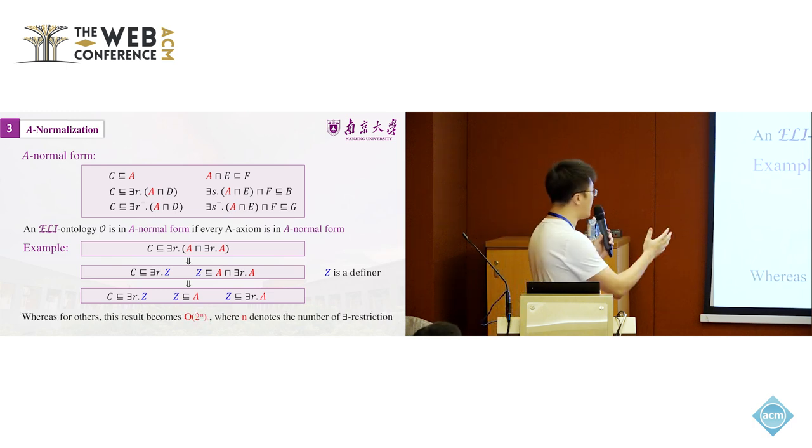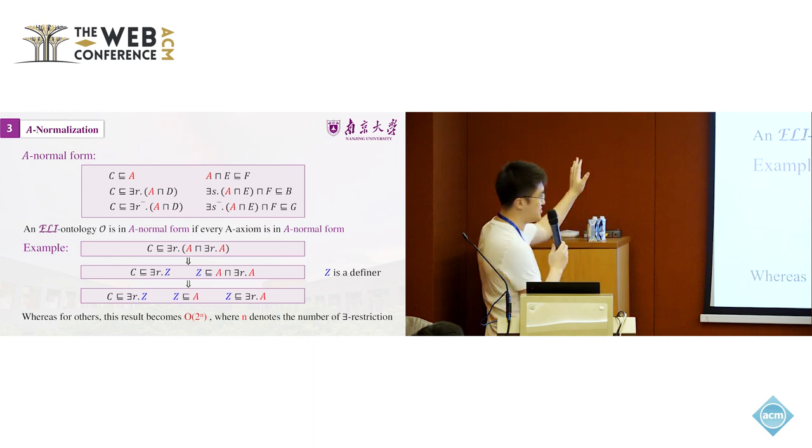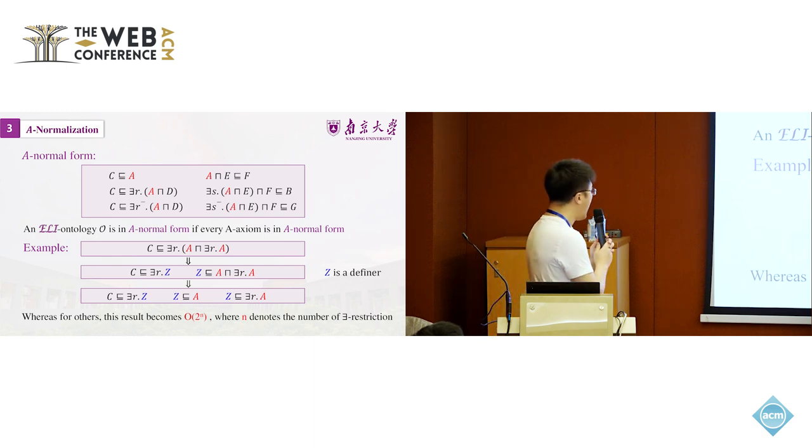Our method introduces a number of definers which is bounded by O of n, where n denotes the number of existential restrictions. So it's a linear introduction of definers. For other methods, the result becomes O of 2 to n, where n denotes the number of existential restrictions. So it's an exponential introduction of definers.